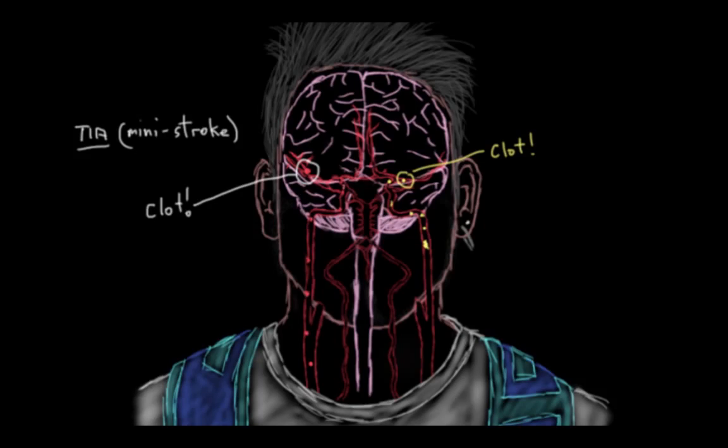Now if either of these types of clots goes away on its own within 24 hours, so if they dissolve, or if the body's own mechanisms break them down and they go away within 24 hours, then you've had something called a TIA, or a mini stroke. Simply having had one or more of these mini strokes greatly increases your risk of having a proper stroke. So that was an overview of some of the non-modifiable risk factors for strokes.